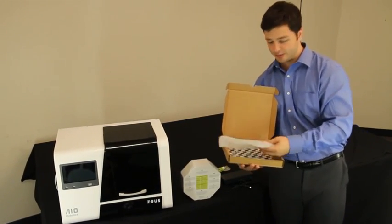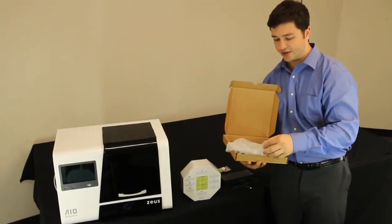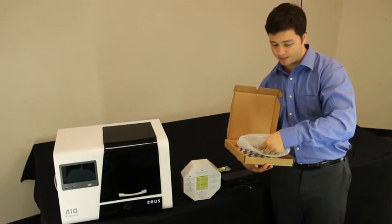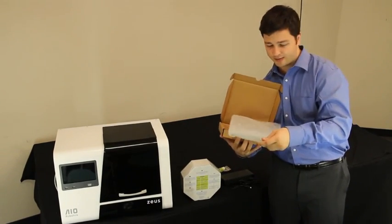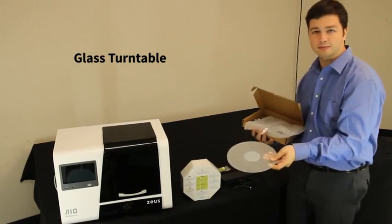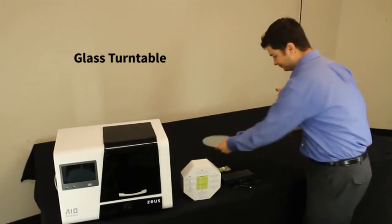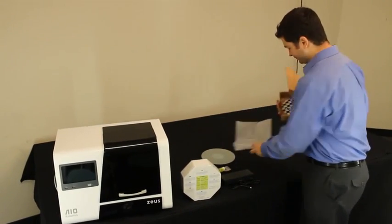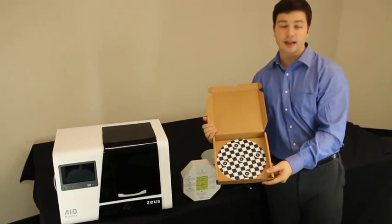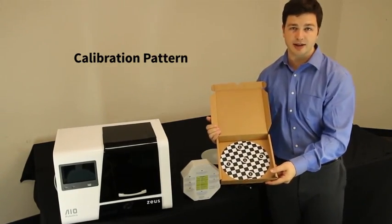Underneath you will find the turntable. It is wrapped in a bubble bag because it's tempered glass. It's stable glass but still protected. And at the bottom of the second accessory box, you will find a calibration pattern.